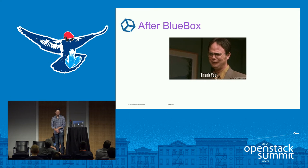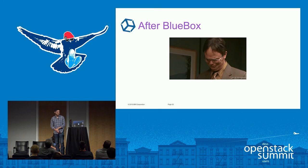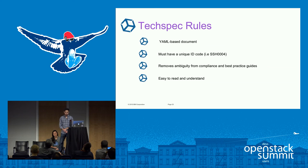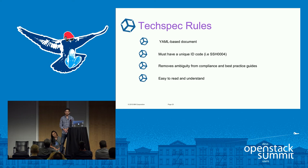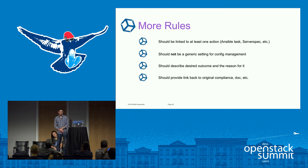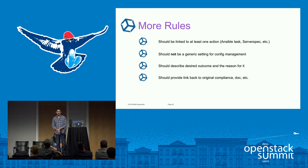Things got a little better when Blue Box joined. A couple of the rules: YAML-based documents needed to have a specific ID code, remove the complexity behind compliance and best practice guidelines, and make sure they're easily readable and understandable. They should be linked to at least one Ansible task or a ServerSpec test. They shouldn't be generic config settings — none of that 'making sure a user exists' stuff. They should describe the expected outcome and the reason behind it, and they should have a link back to the original compliance document.